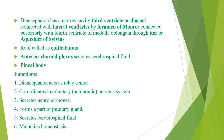The diencephalon contains a narrow cavity called the third ventricle or diacele. It is connected with the lateral ventricles of the cerebral hemispheres by the foramen of Monroe and connected posteriorly with the fourth ventricle of the medulla oblongata through an aperture called the iter or aqueduct of Sylvius. The roof of the diacele is called epithalamus, whose anterior part forms the anterior choroid plexus, which secretes cerebrospinal fluid, and whose posterior part forms the pineal body, which acts as an endocrine gland and secretes melatonin hormone.